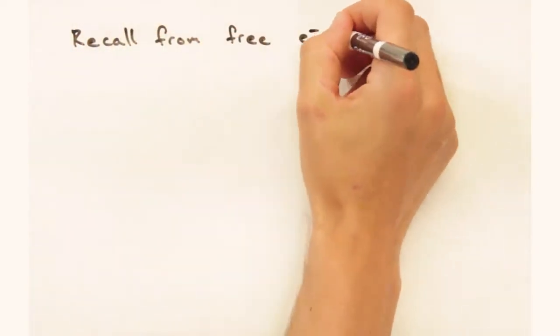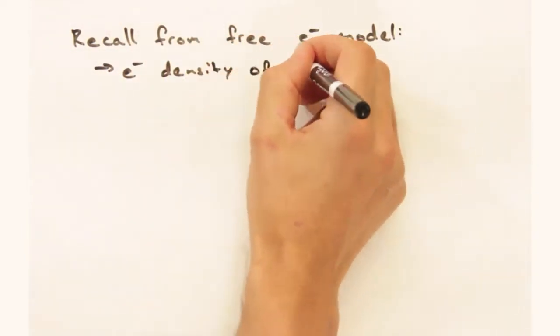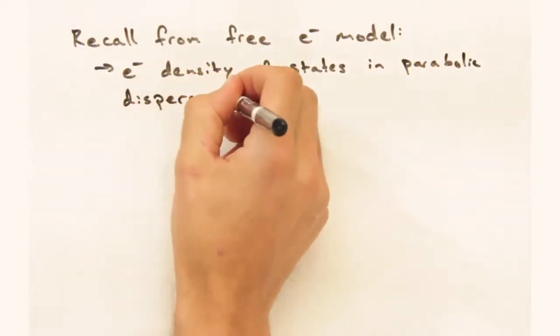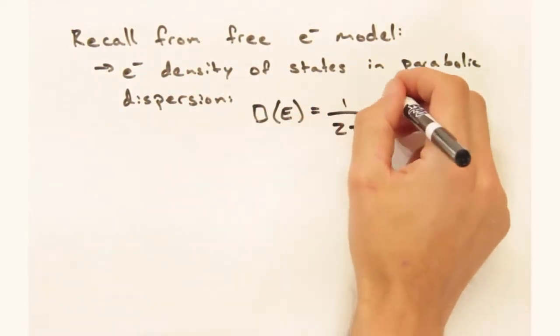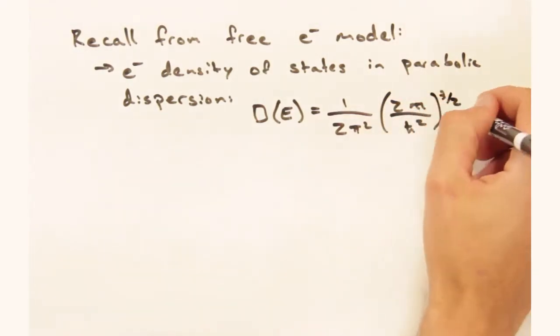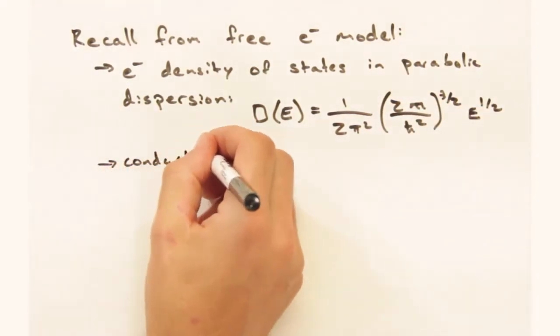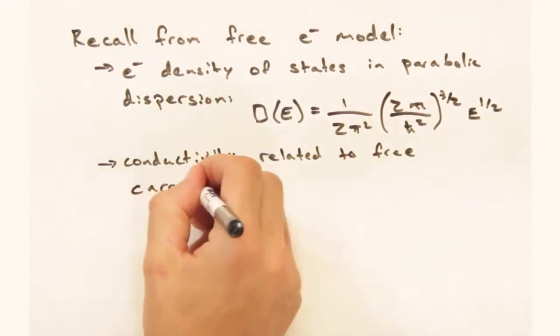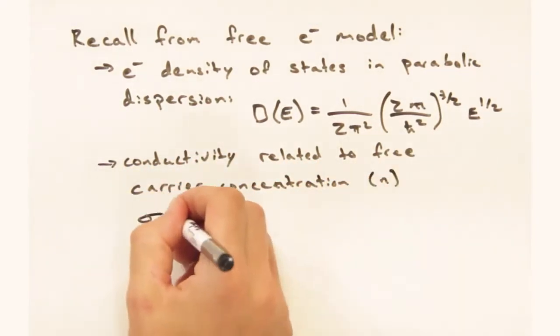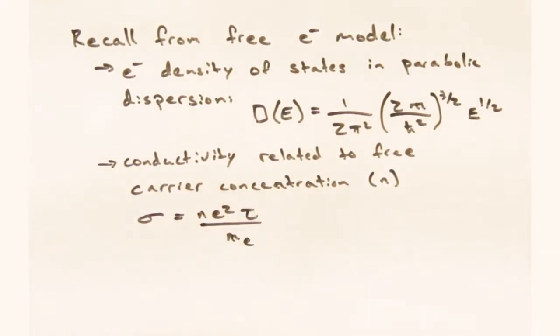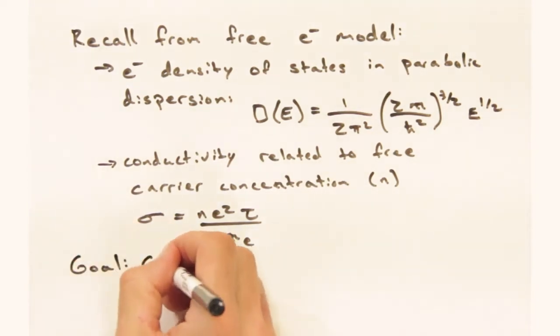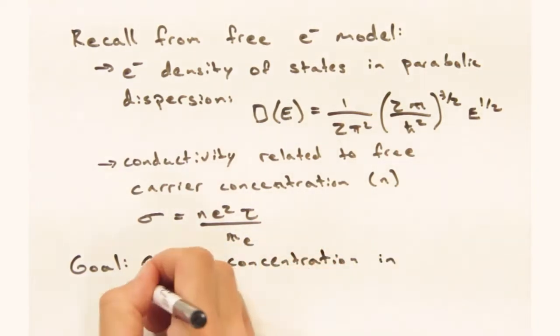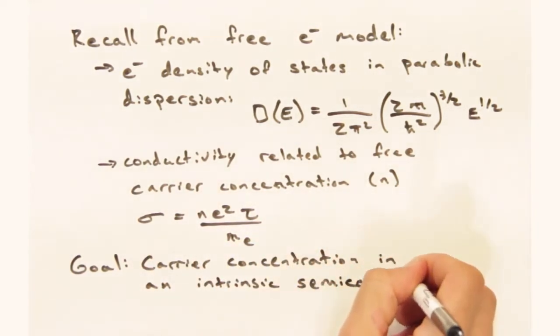To start this off, recall from the free electron model that we developed an expression for the electron density in the parabolic dispersion. We were also able to show that conductivity has a direct relationship to the free carrier concentration n. And even though we have bands and band gaps now, turns out that we can use this same approach and get to a similar expression for conductivity. To that end, the goal today is to develop an expression for the carrier concentration in an intrinsic semiconductor.